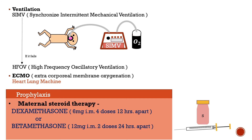In the case of betamethasone, beta has B, which is the 2nd letter, so 2 doses are required — 2 doses covering 24 mg in 2 days. Finding patterns makes studying easy, and we will together find such patterns to build our concepts.